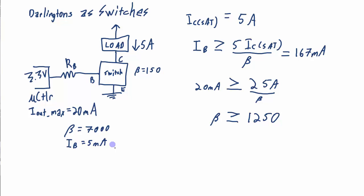So like a quarter of the maximum. And now all I need to do is figure out what value of RB do I need to give me this IB of 5 milliamps. Well to get that 5 milliamps, I'm going to have 3.3 volts minus the voltage at the base. And the voltage at the base, remember I'm actually going through two base emitter junctions.